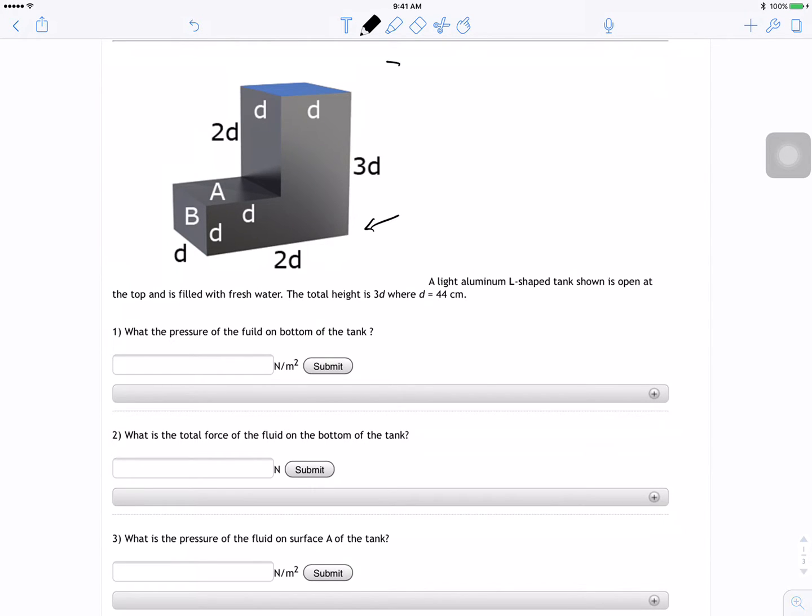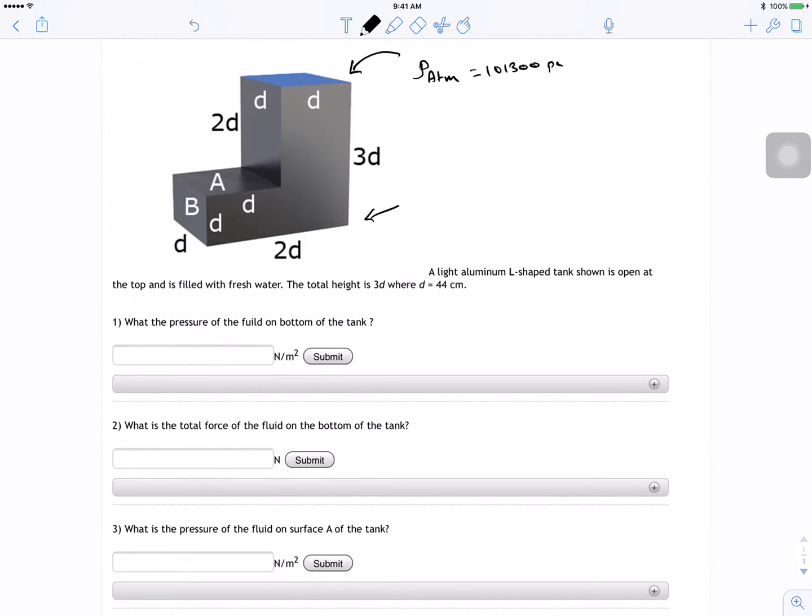So since it's open in here, that means we need to add the atmospheric pressure, which is equal to 101,300 pascals, and then we need to add the pressure that's from the water. So P atmospheric pressure plus the pressure from water, which is equal to rho the water, the density of the water times g times the height, and the height in this case is 3d.